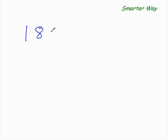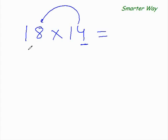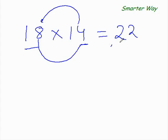What is 18 times 14? So first thing, add this 4 to 18. 18 plus 4 is 22. So 8×4 is 32. Carry forward 3, write 2 here. 22 plus 3 is 25. So the answer is 252.